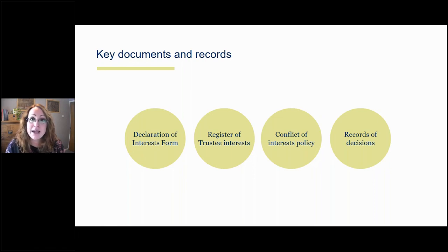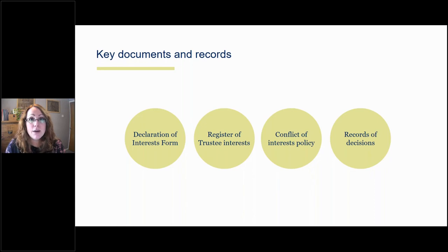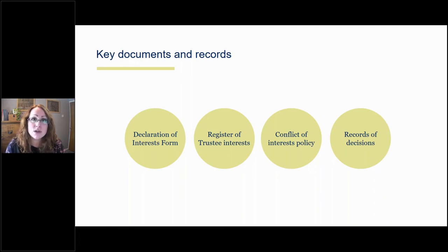For those interested in sample documents, the NCVO has a whole suite of very useful documents — a sample declaration form, a sample register of interests, and a sample conflict of interest policy. These are available to NCVO members, but for very small charities membership is free, and the cost of membership is quite low. It's an incredibly useful resource for charities, with a huge amount of guidance on these issues and many more in terms of governance, regularly updated with best practice.